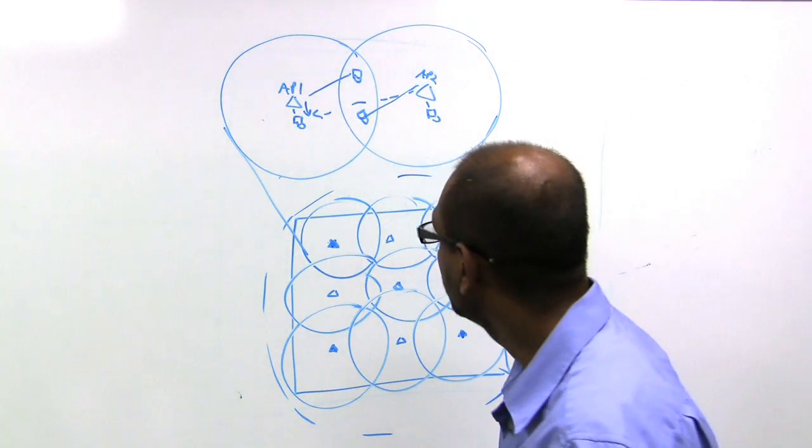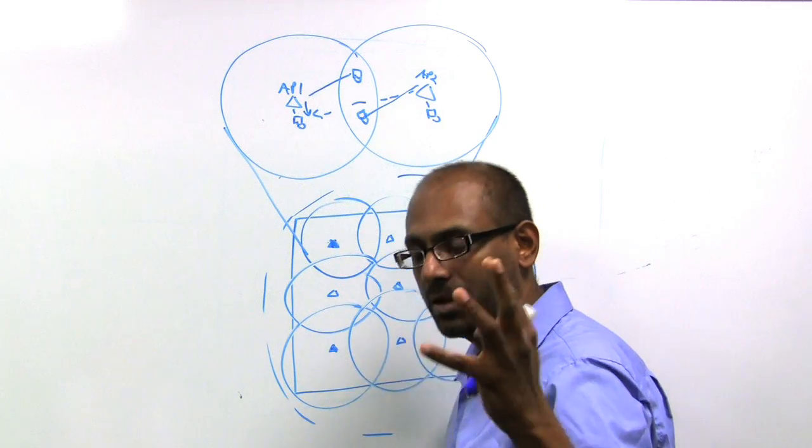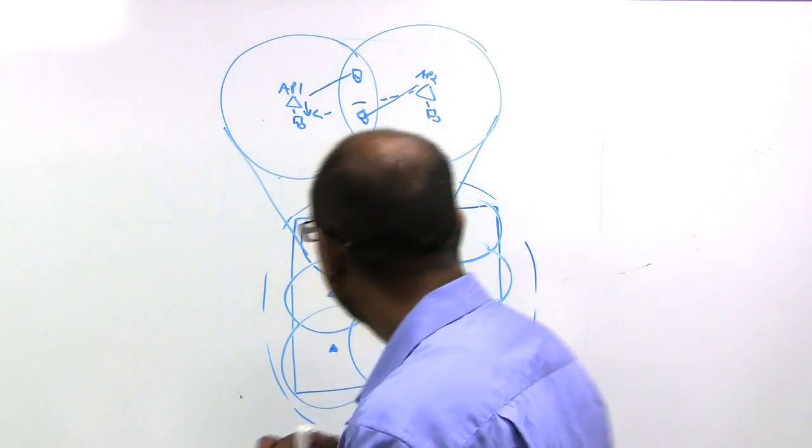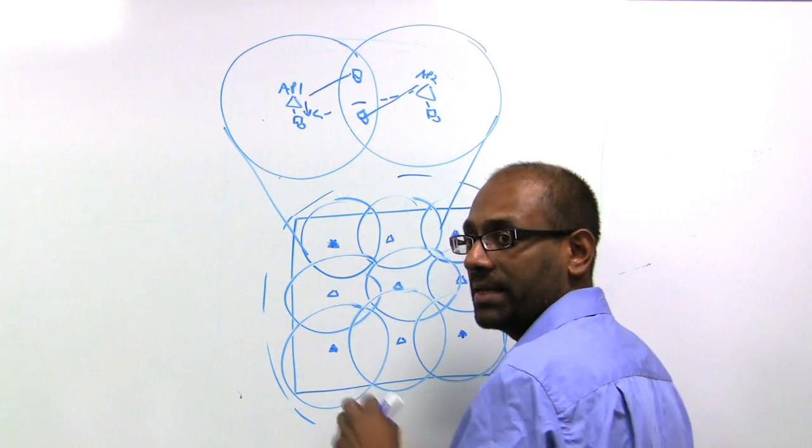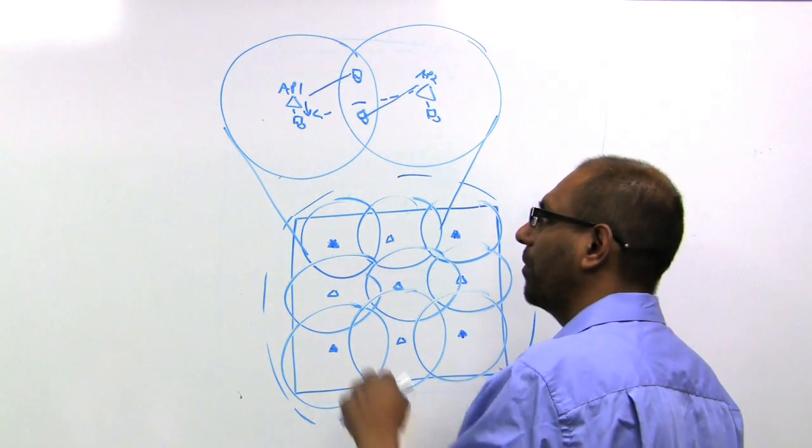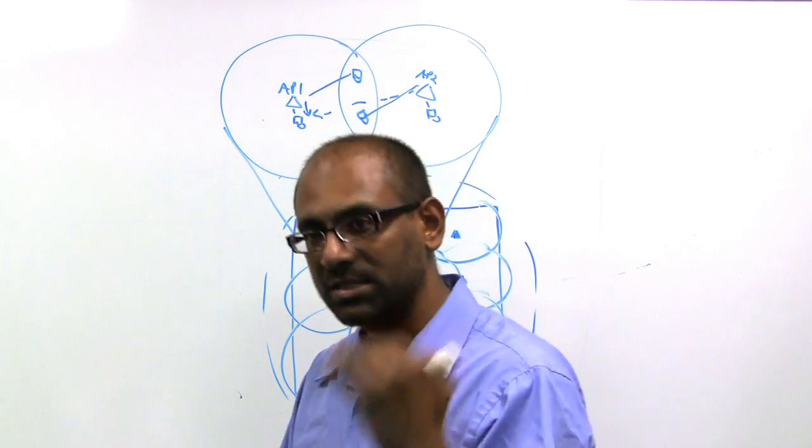Just at a high level, here's what we do. So every access point, as we described in a companion video where we talked about inter-AP coordination, every access point maintains a list or table of all its contenders and the load in every class of service.